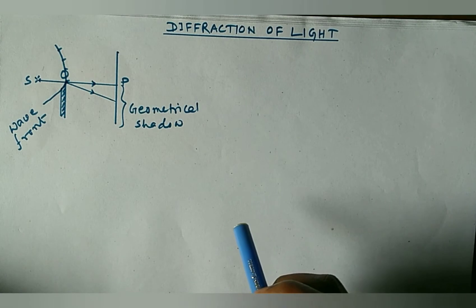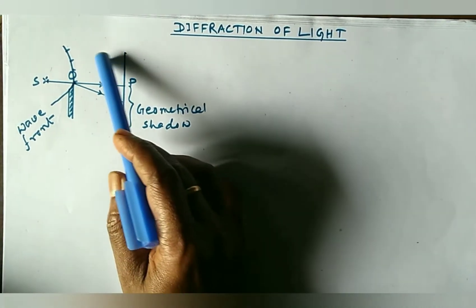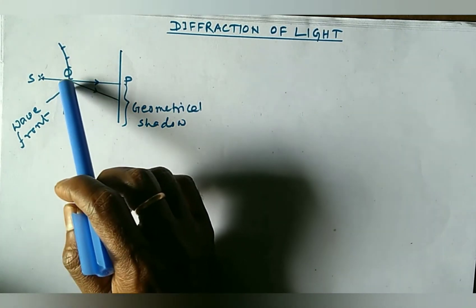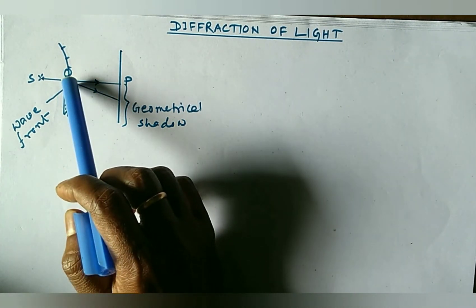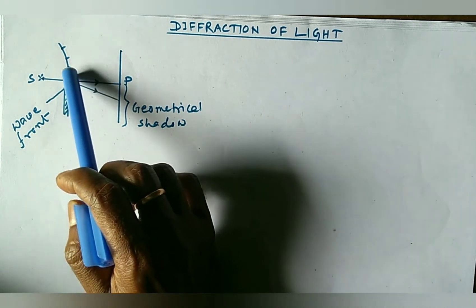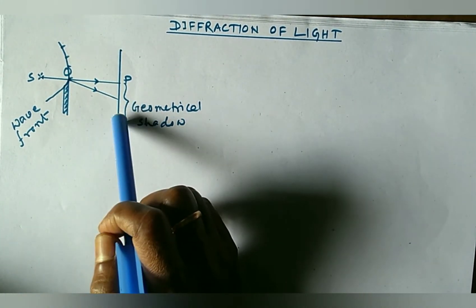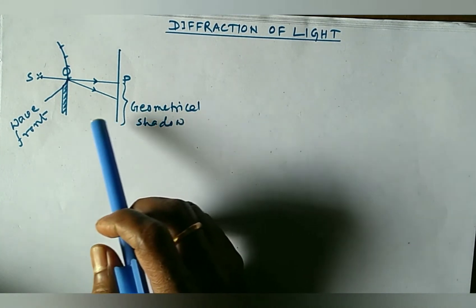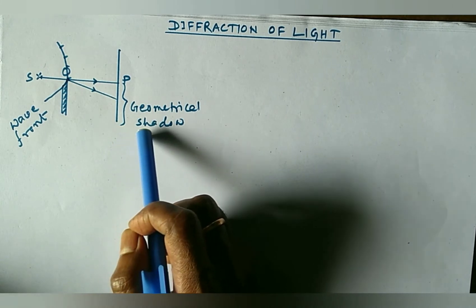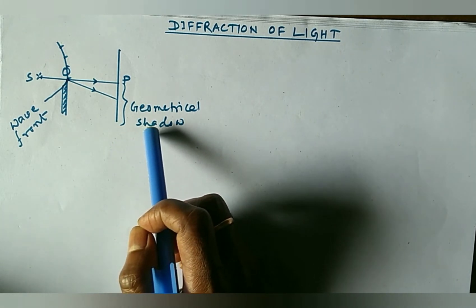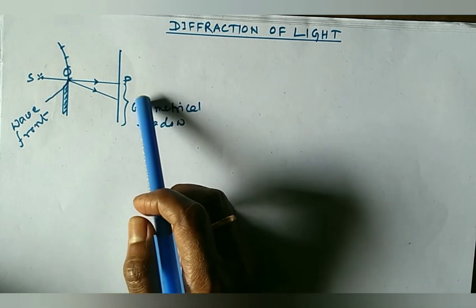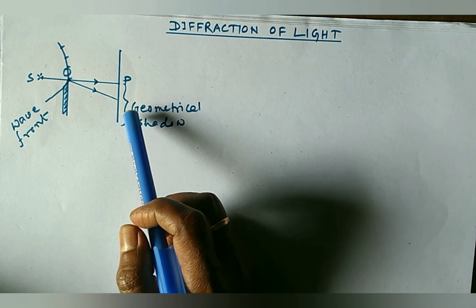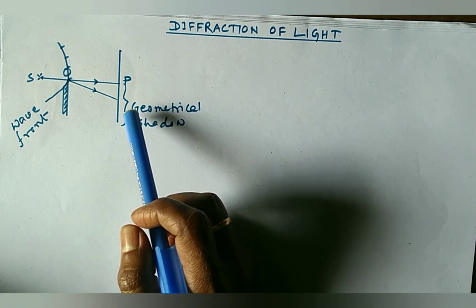Now, there is a question: how is it possible? That means, why does the light change its direction from the sharp edge? This is explained very nicely by Fresnel. He gave a satisfactory explanation of diffraction by using Huygens principle in conjunction with the principle of superposition.